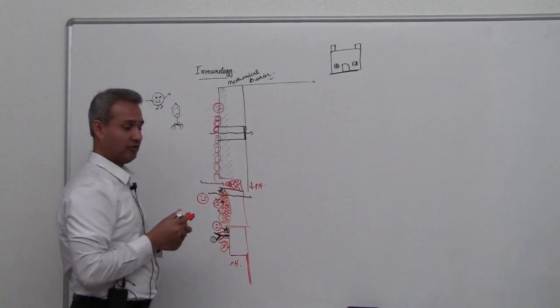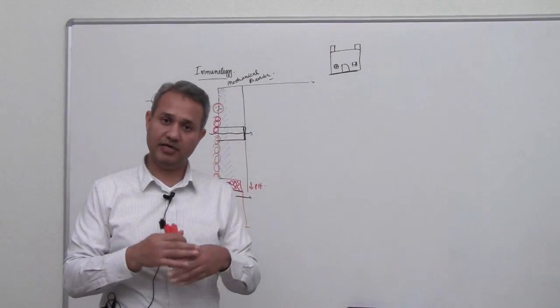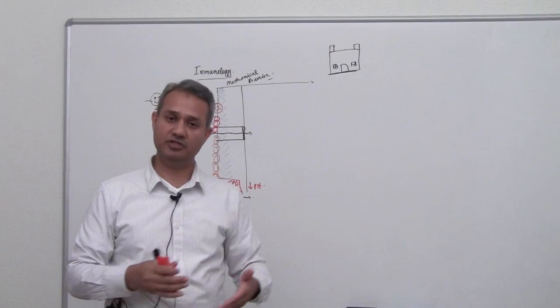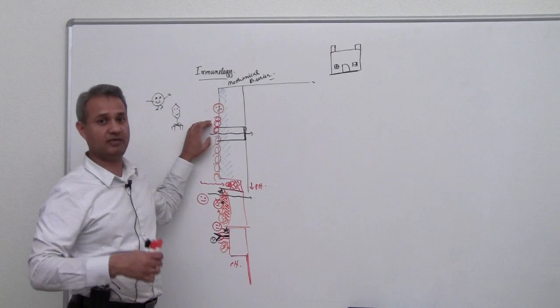Our mechanical barriers could not offer resistance, or there was an injury to the mechanical barrier. That is why many times when we have injuries, we start developing infections. The barrier was breached for some reason.